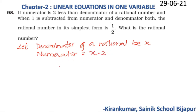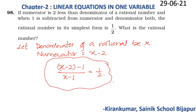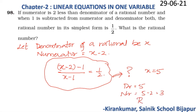According to the question, if both numerator and denominator are each subtracted by 1, we get 1/2. So (x − 2 − 1)/(x − 1) = 1/2. Solving this simple equation gives x = 5. So the denominator is 5 and the numerator is 5 − 2 = 3, making the rational number 3/5. Try solving this equation to verify x = 5.